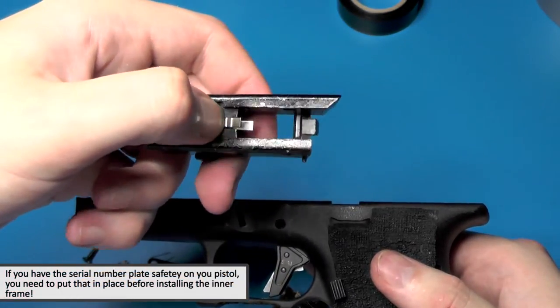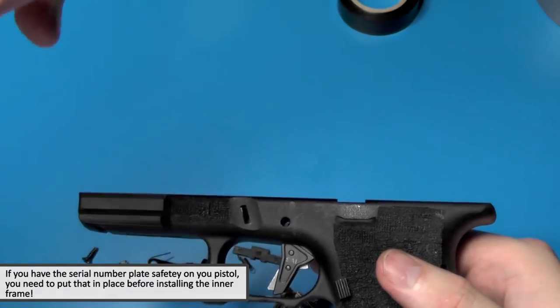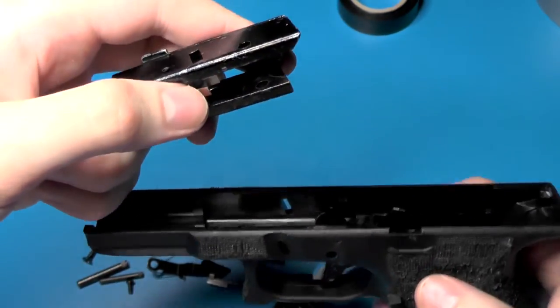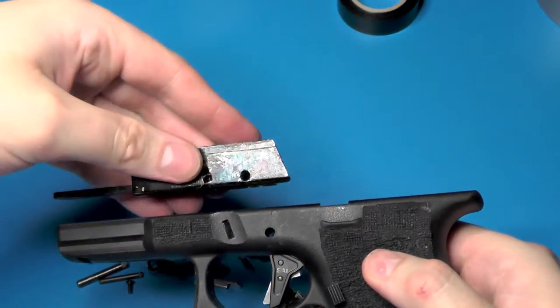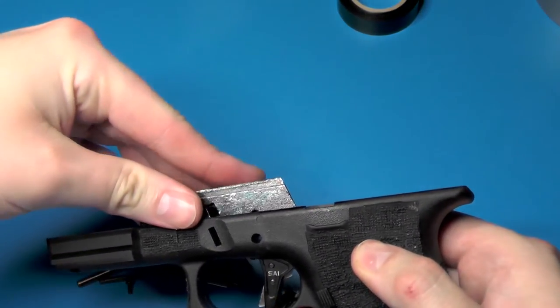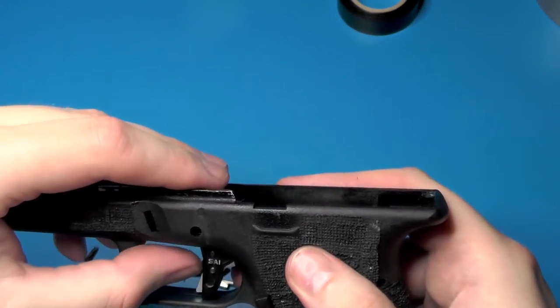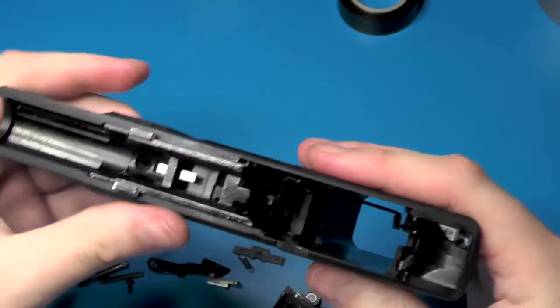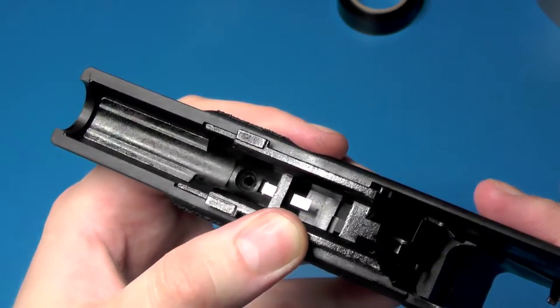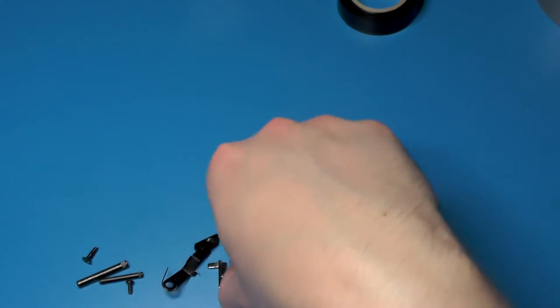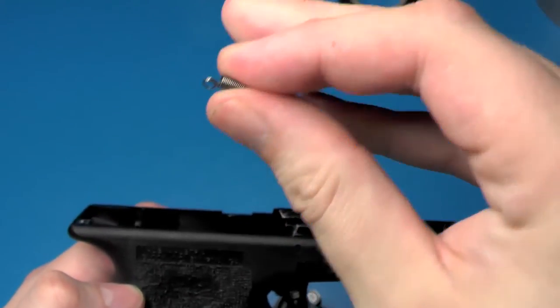So take note of this spring in here, because if you try to install it upright that spring is going to fall down. So you need to do it sideways to keep that spring in place. And again, you might have to wiggle it around a little bit to get it in place.